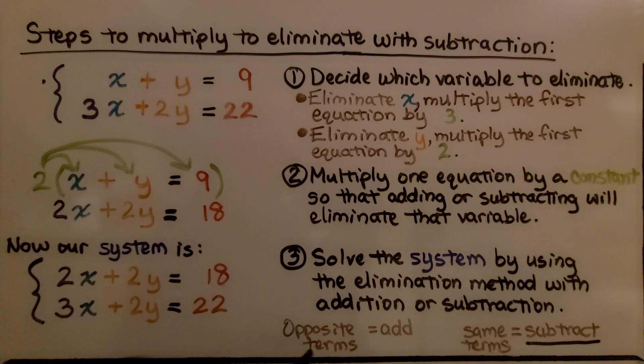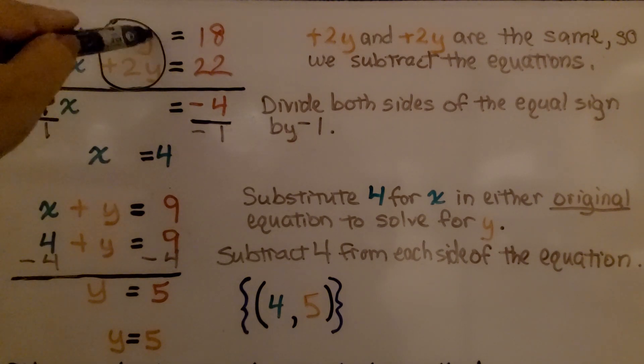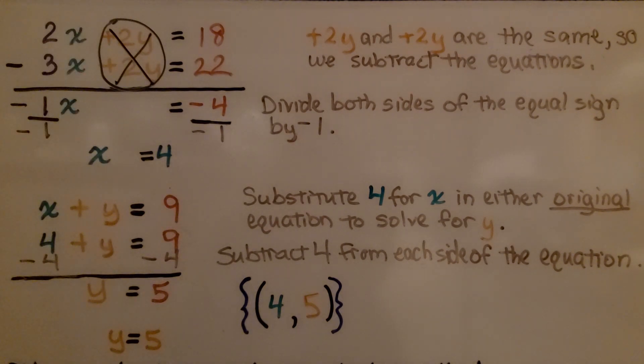If we have opposite terms, we will add, but here we have the same term so we will subtract. Plus 2y and plus 2y are the same, so we subtract the equations. That will eliminate this. If we have 2y minus 2y, it's gone. We've eliminated it.